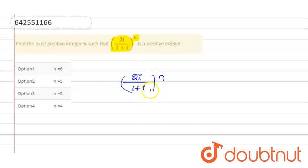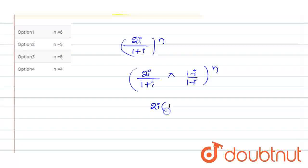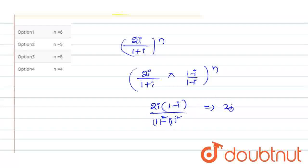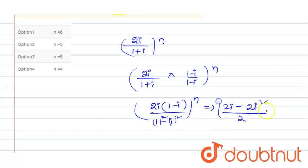So we multiply and divide by (1 - i): (2i / (1+i)) × (1-i)/(1-i), whole power n. The denominator is in the form (a+b)(a-b) = a² - b², giving 1² - i² = 1 - (-1) = 2. The numerator becomes 2i(1-i) = 2i - 2i². So we get (2i - 2i²)/2, which simplifies to (1 - i)^n.